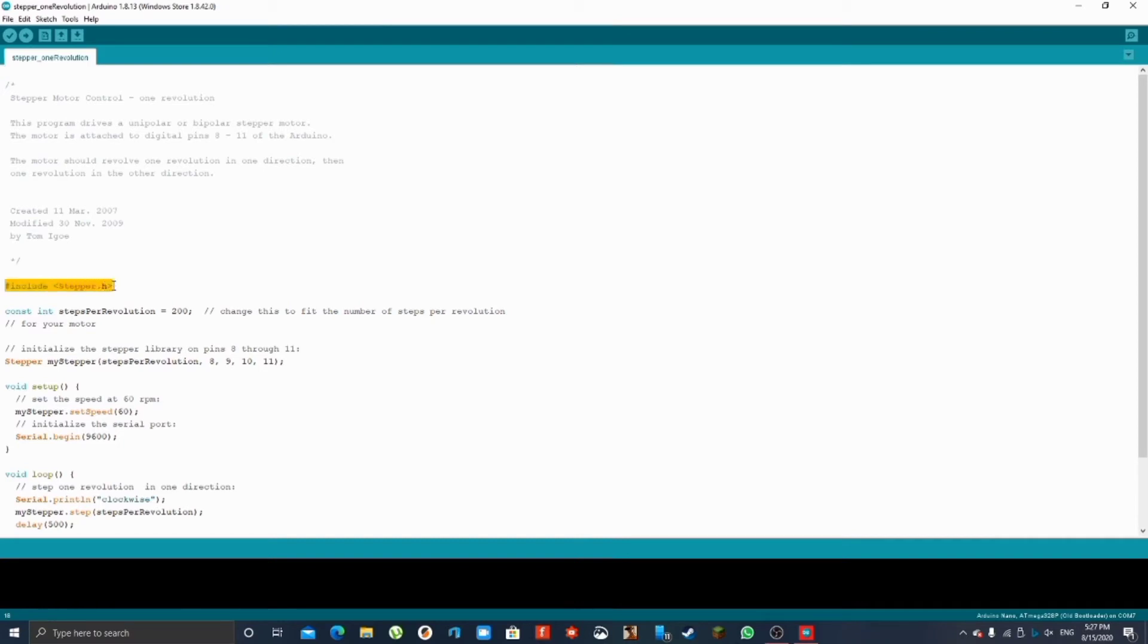Over here we will include our library. This is the stepper library and this example is by Tom Igoe. Over here we will enter our steps per revolution. Mine is 48.